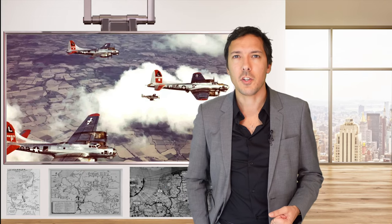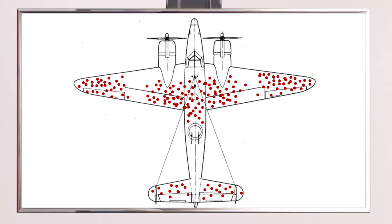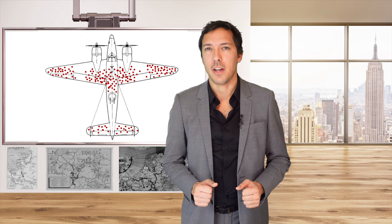Naturally, the military has already investigated the question and they examined dozens of planes returning from combat to see where they were hit the worst. They give you the results of their analysis. Now have a close look at this drawing showing where the bullet holes are most likely to be observed.